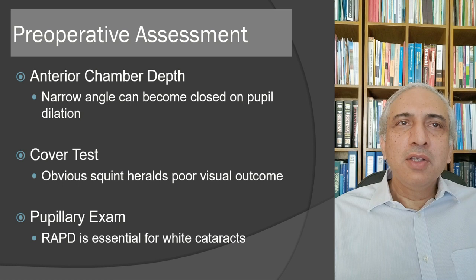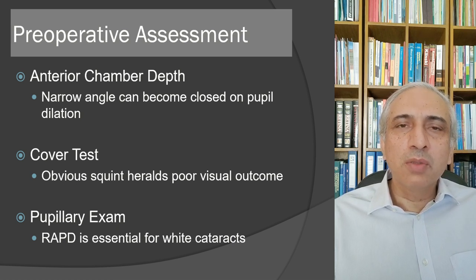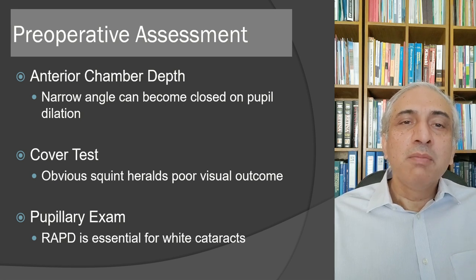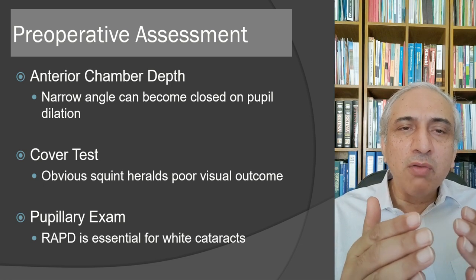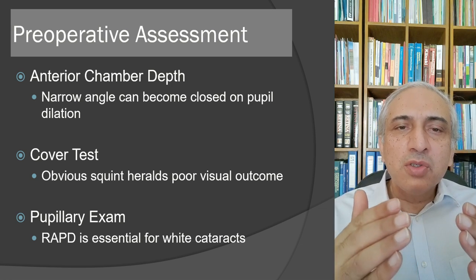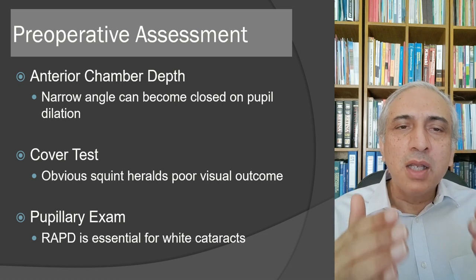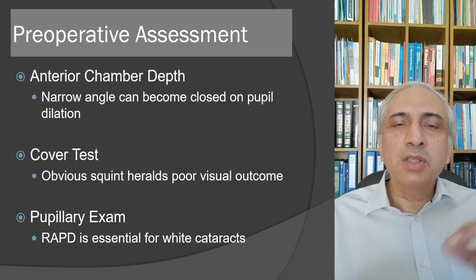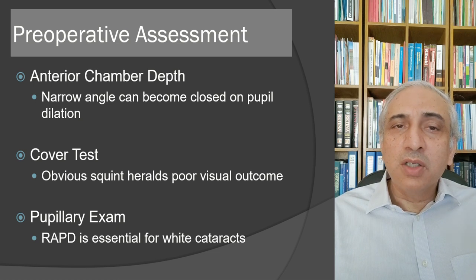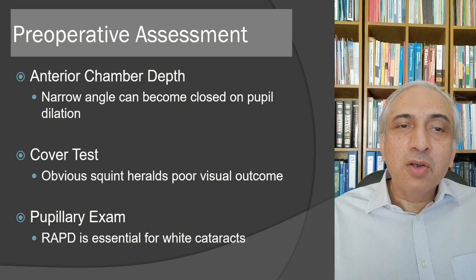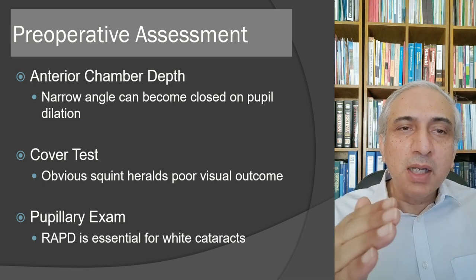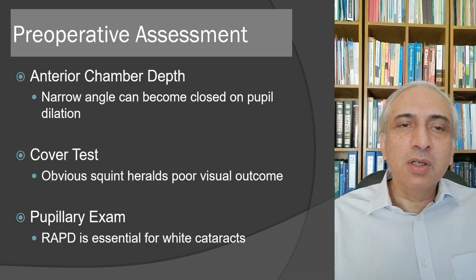Anterior chamber depth is important — narrow angles can close with pupil dilation, precipitating angle closure. When doing cataract surgery in patients with narrow angles, dilating drops should be put in just before surgery, not hours before, to avoid triggering an angle closure glaucoma attack.